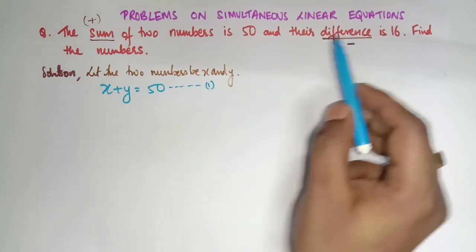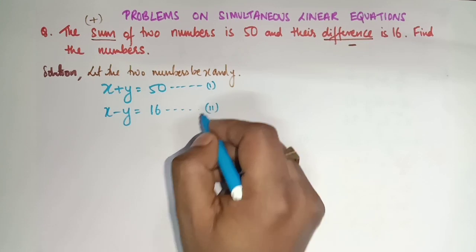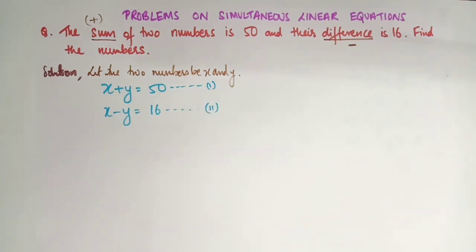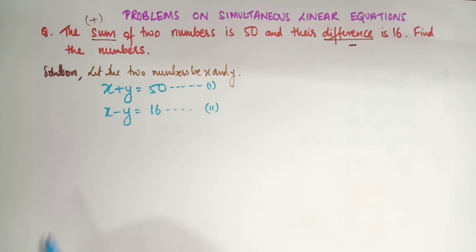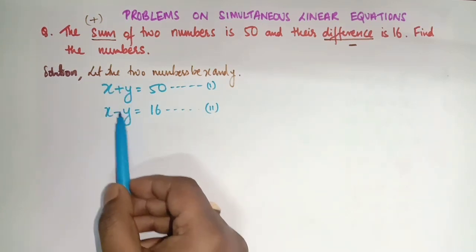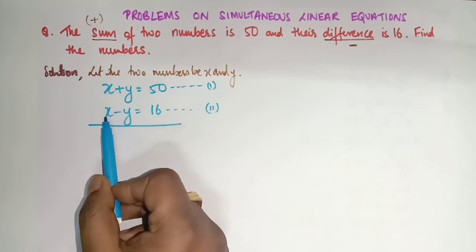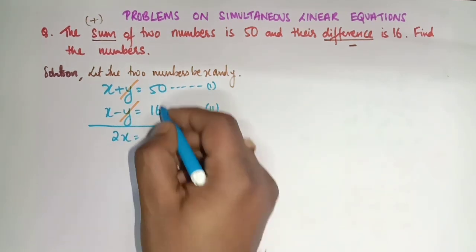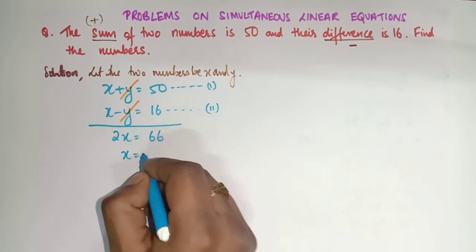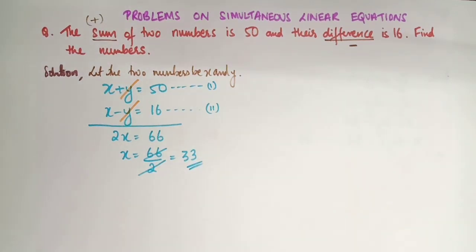Now, difference means minus. So x − y = 16. We take this as Equation 2. Now I will use the Elimination Method to solve. You can see: x + y = 50 and x − y = 16. No need to multiply because the coefficient of y is 1 on both sides. The signs of y are opposite (plus and minus), so y gets cancelled directly. x + x gives 2x. 50 + 16 = 66. Therefore x = 66 ÷ 2 = 33. So x = 33.